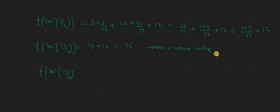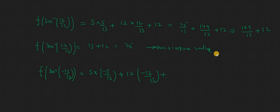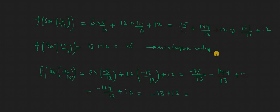Similarly, when x = sin⁻¹(−12/13) — i.e., third quadrant — we get: 5×(−5/13) + 12×(−12/13) + 12 = −25/13 − 144/13 + 12 = −169/13 + 12 = −13 + 12 = −1. This is the minimum value. Both methods give the same answer, confirming the result. Thank you.